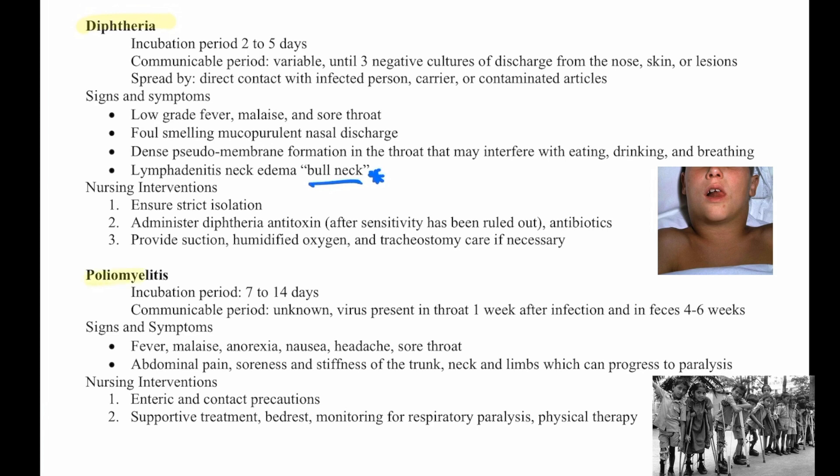Then we have poliomyelitis. The incubation period is 7 to 14 days. The communicable period is unknown; the virus is present in the throat one week after infection and in feces four to six weeks after. Signs and symptoms are fever, malaise, anorexia, nausea, headache, sore throat, abdominal pain, soreness, and stiffness in the trunk, neck, and limbs, which can progress to paralysis.